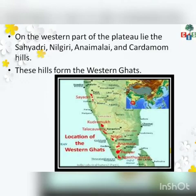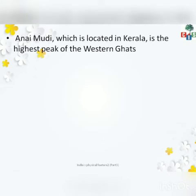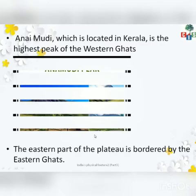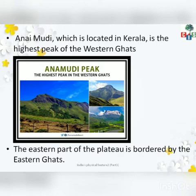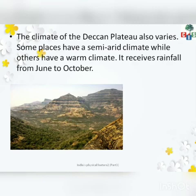These hills form the Western Ghats. Anamalai, which is located in Kerala, is the highest peak of the Western Ghats. The eastern part of the Plateau is bordered by the Eastern Ghats. The climate of the Deccan Plateau also varies — some places have a semi-arid climate while others have a warm climate. There is rainfall from June to October.